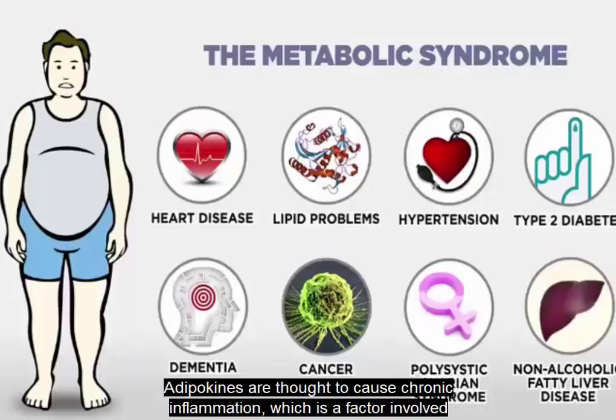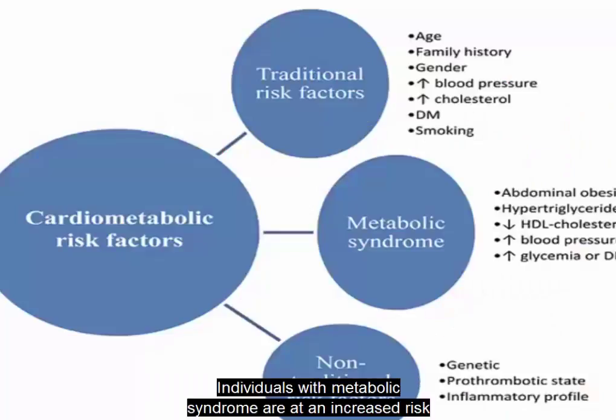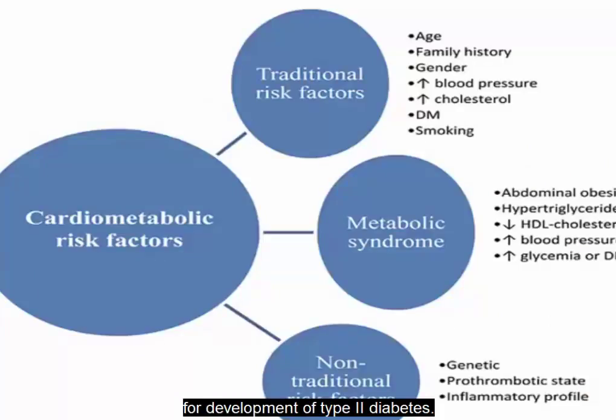Adipokines are thought to cause chronic inflammation, which is a factor involved in insulin resistance, type 2 diabetes, and cardiovascular disease. The two adipokines believed to affect insulin sensitivity are adiponectin and leptin. Individuals with metabolic syndrome are at an increased risk for development of type 2 diabetes.